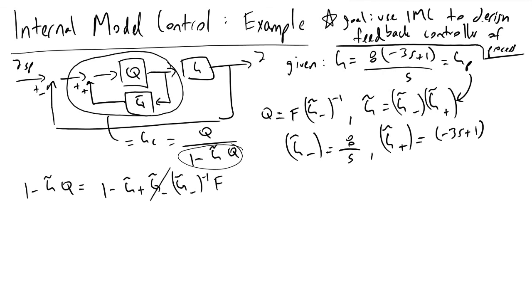And the nice thing here is that this cancels out, so our denominator becomes 1 minus G tilde plus times F.